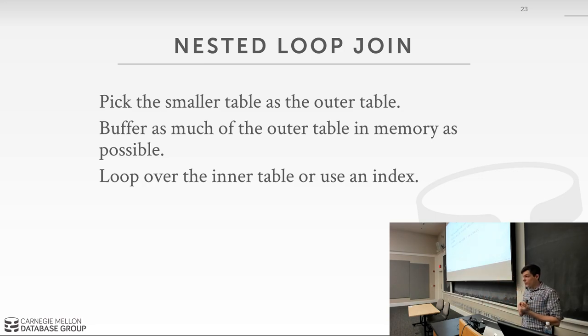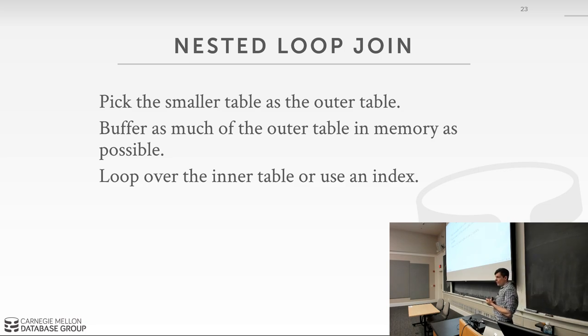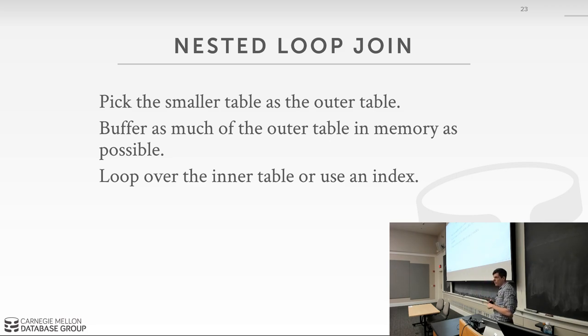Nested loop join summary: always try to pick the smaller table as the outer table. Do a sequential scan over the outer table and either a sequential scan or index probe on the inner table. Try to put as much of the outer table in memory as possible to reuse that data as you scan the inner table. If you have an index on the inner table, definitely use it — database system optimizers will always try to pick the index.